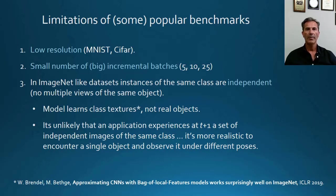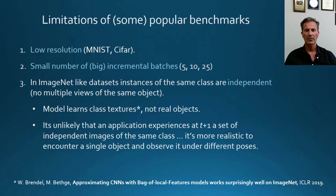Some popular dataset benchmarks are not ideal for continuous learning applications — for example, because of low resolution (MNIST and CIFAR), or because of a small number of incremental batches, typically 5, 10, or 25. ImageNet is also not appropriate for some applications because the instances of the same class are independent. It is unlikely that in real applications the system experiences a set of independent frames of the same class; it is more realistic that it encounters a new object and observes it under different poses.